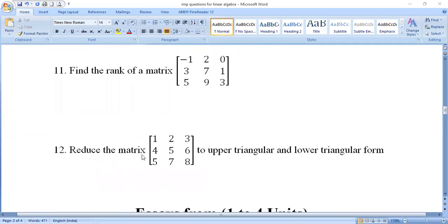Twelfth question: Reduce the matrix [1, 2, 3; 4, 5, 6; 5, 7, 8] to upper triangular and lower triangular form. For upper triangular, we get zeros below the diagonal, and for lower triangular, zeros above the diagonal. This 12th question is a very important question. These questions repeat from previous question papers, so prepare them well.